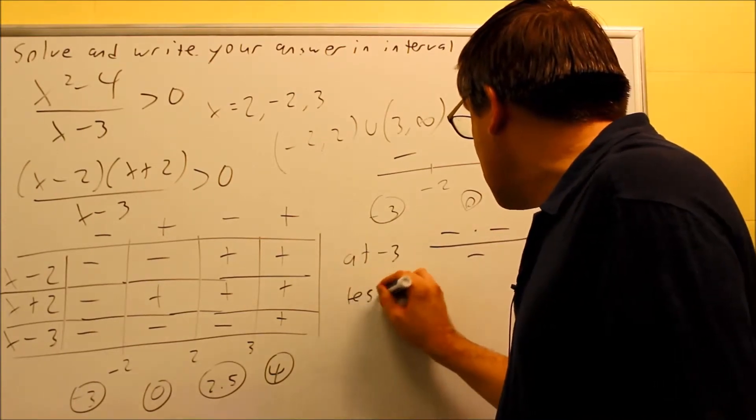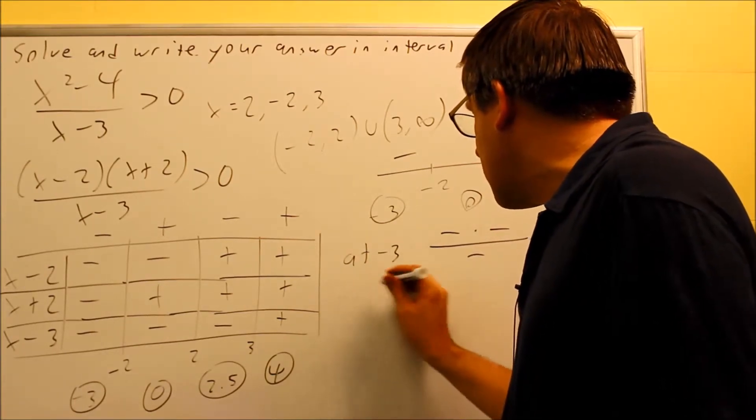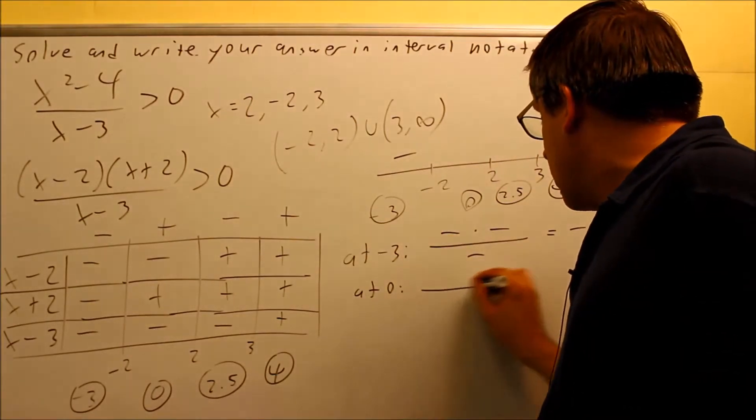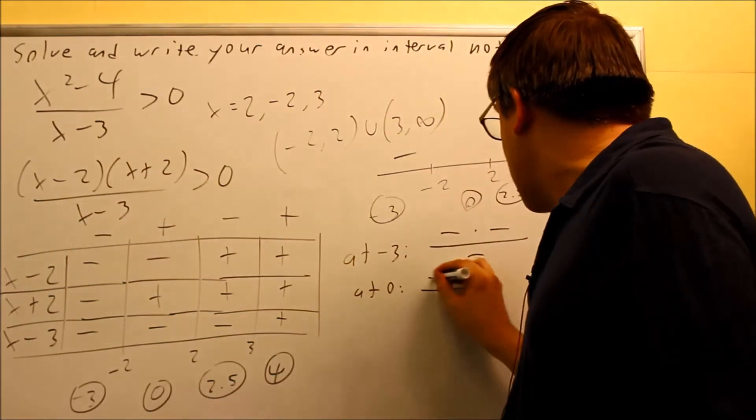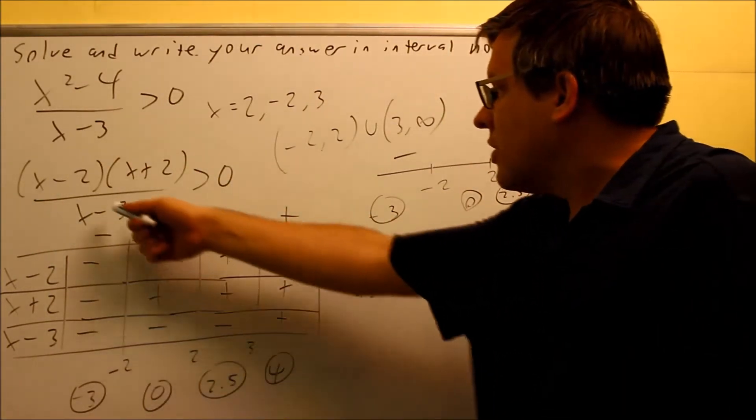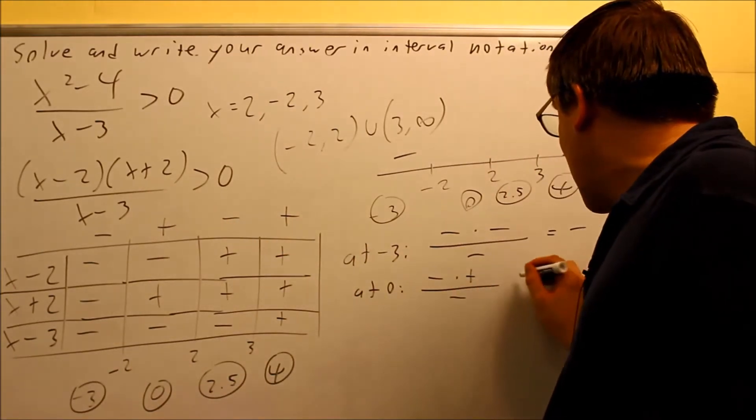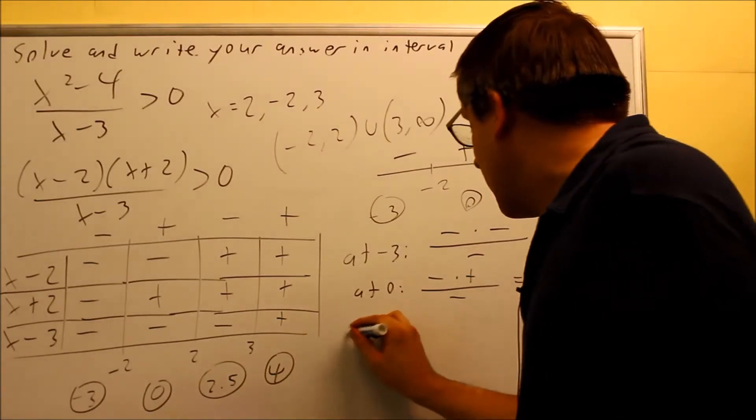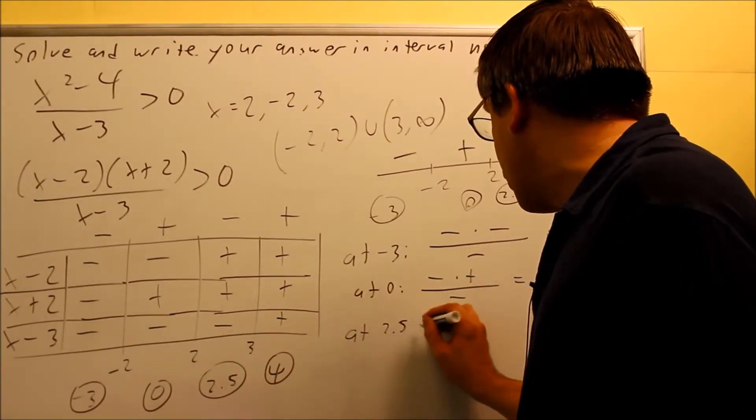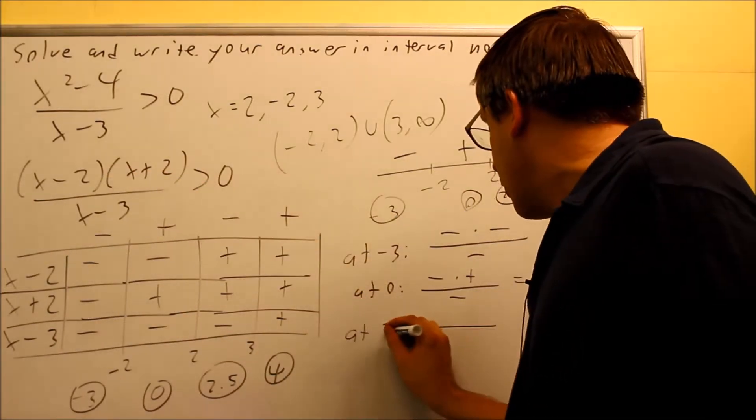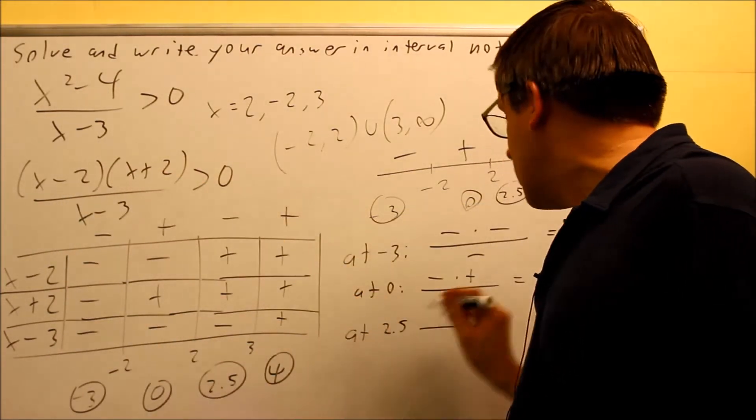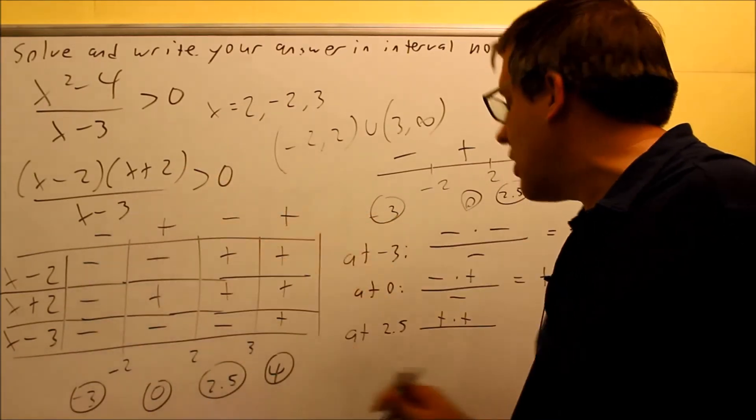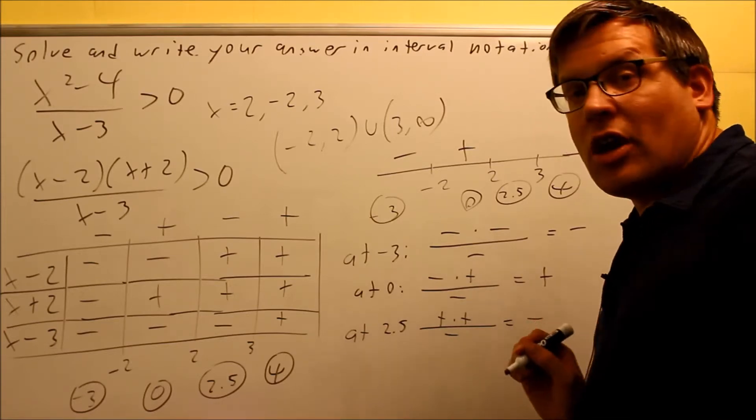Next, I'm going to test 0. So basically at 0 is what I'm testing next. So the test point is 0. You put 0 into each of these. 0 minus 2 is negative. 0 plus 2 positive. 0 minus 3 is negative. I have an even number of negatives. This time I get a plus, same result I had before. Then I want to test it at 2.5. 2.5 is going to go in each of these. So 2.5 here. 2.5 minus 2 is positive. 2.5 plus 2 is positive. 2.5 minus 3 is negative. Therefore, I get a negative as my result.